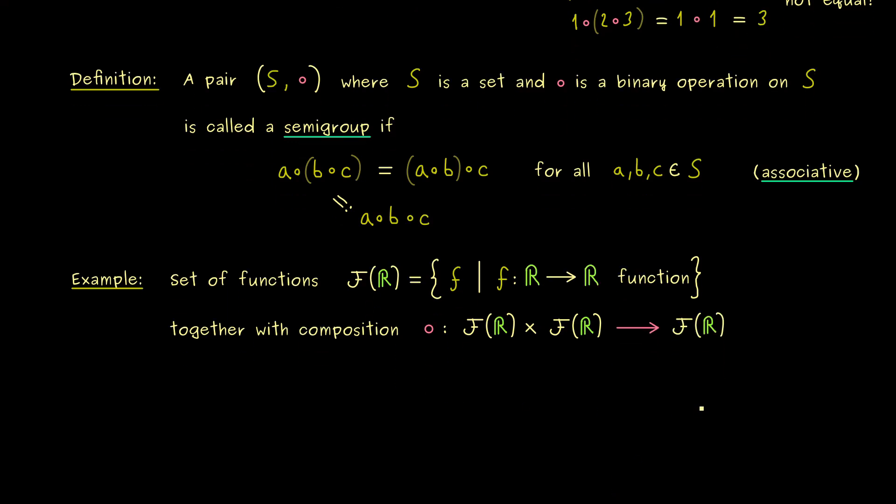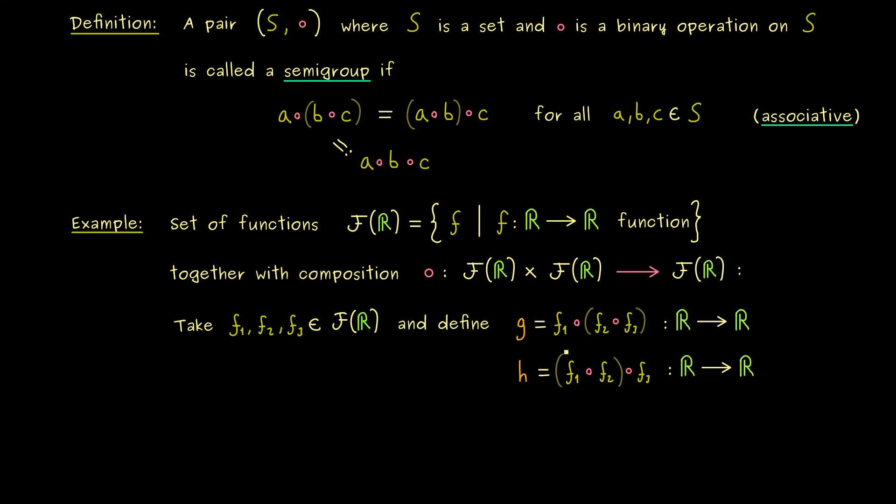But now the question is, is it also associative? If it is, we have our first example of a semigroup. Okay, then I would say, let's check it and let's take three elements from F(ℝ). And maybe we simply call them f₁, f₂, f₃. And then we can define two new functions and maybe let's call them g and h. So g is our first combination here and h the second possibility. And now it's important to know that both give us well-defined functions from ℝ into ℝ. And how they are exactly defined, we can just check by putting in an element x from ℝ.